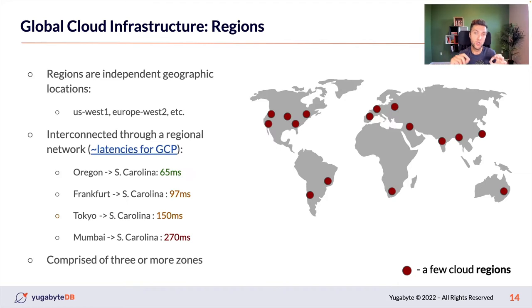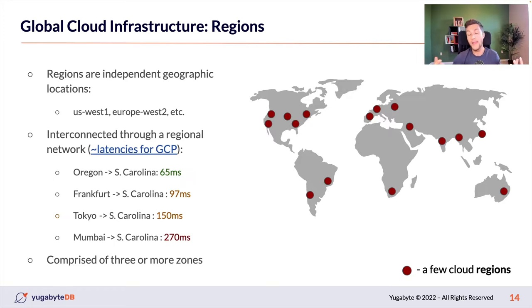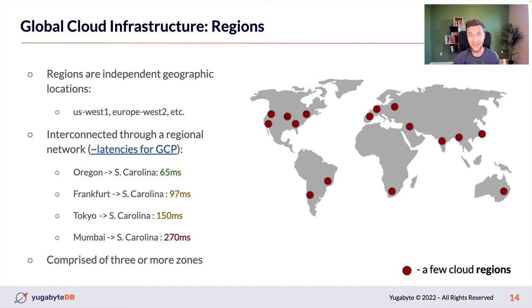As you move farther from the United States, latency increases because requests travel over land and under oceans. For example, the round-trip latency between South Carolina (US East) and Frankfurt is 97 milliseconds, but from Mumbai to South Carolina it's already 270 milliseconds. This is something to keep in mind when building applications and deploying databases that span multiple regions. We'll discuss techniques to handle this in a few minutes.